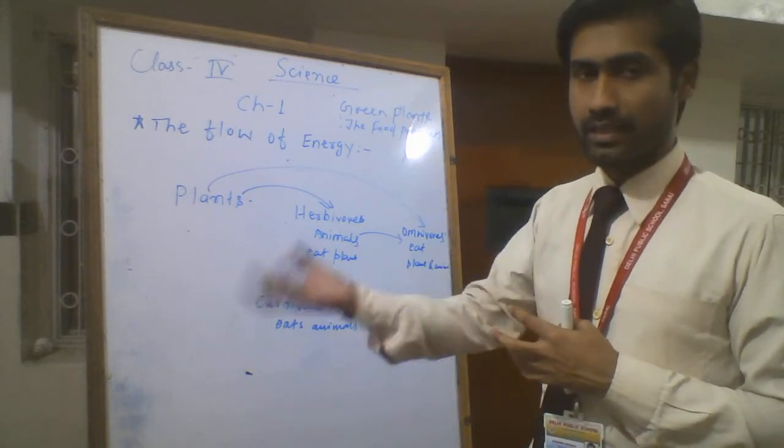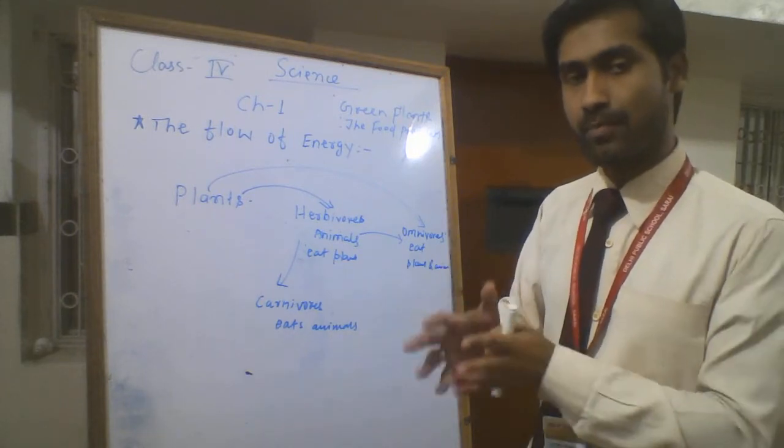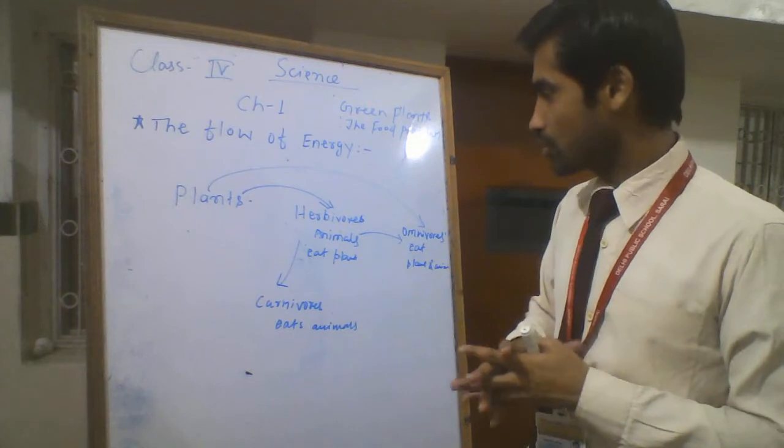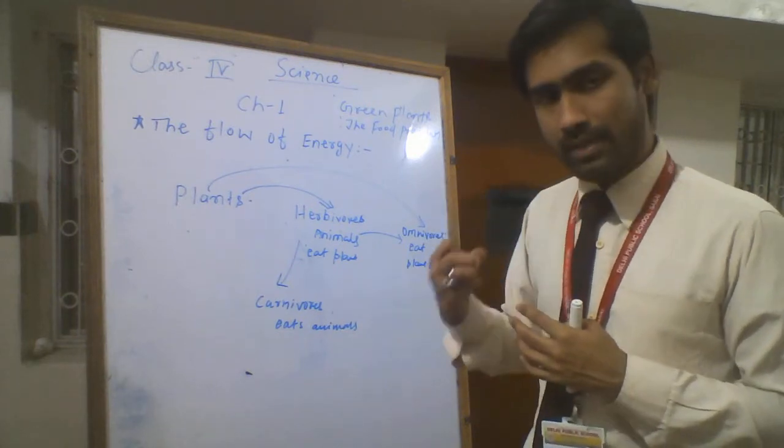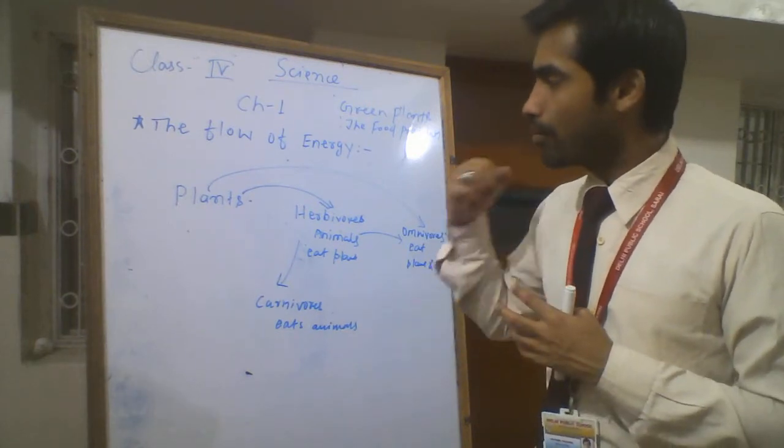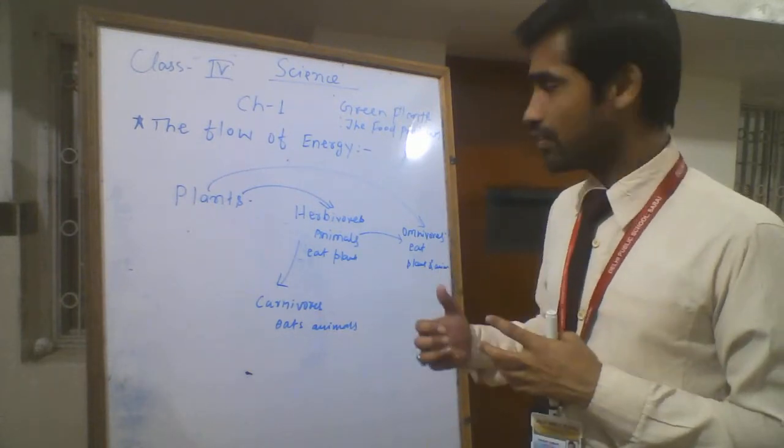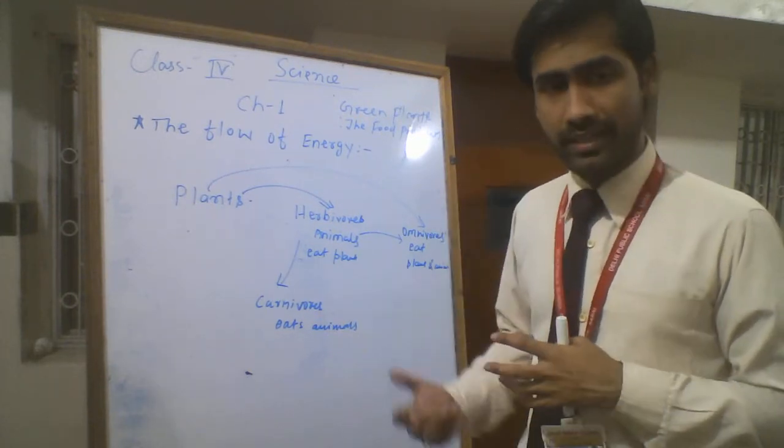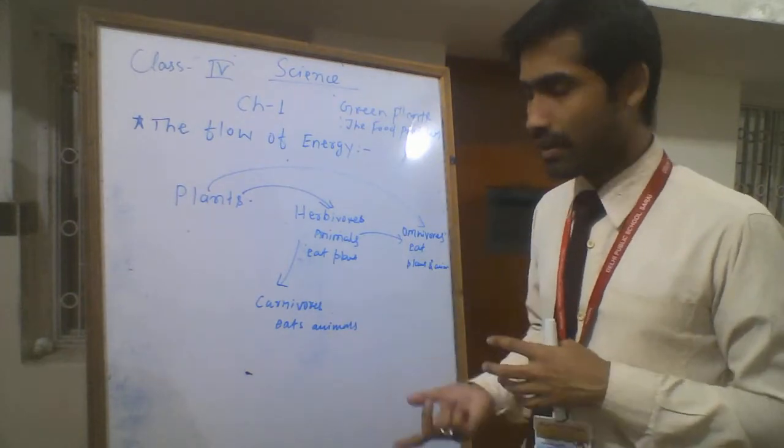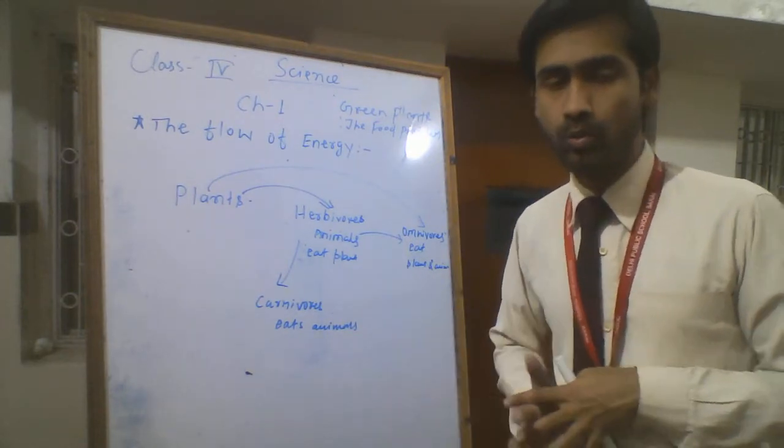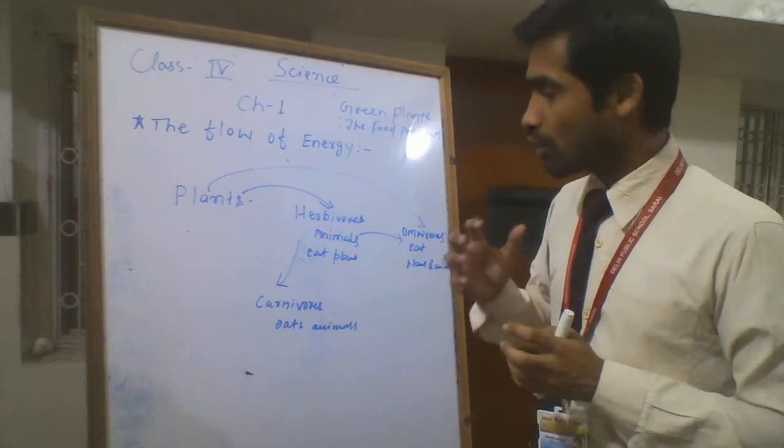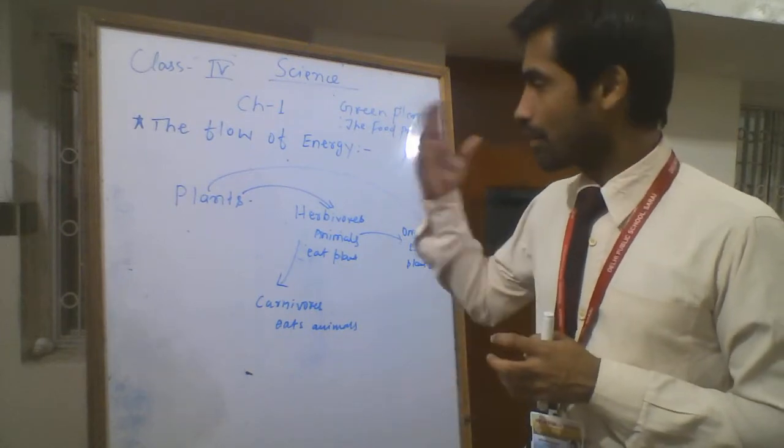We know that carbon dioxide is a dangerous gas for our environment. When plants take carbon dioxide, they purify our environment. So plants help us in many ways. In return, we give carbon dioxide to plants because without carbon dioxide they can't do photosynthesis. So we also help plants.